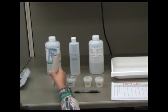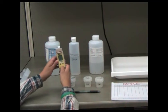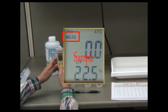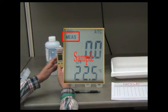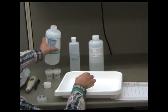Turn on the EC tester and make sure that the tester is in measuring mode. The letters MEAS should appear at the top of the screen. If these letters do not appear, use the mode button to toggle to measuring mode.